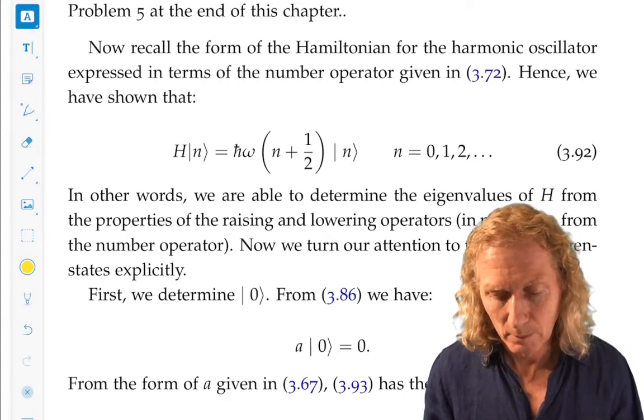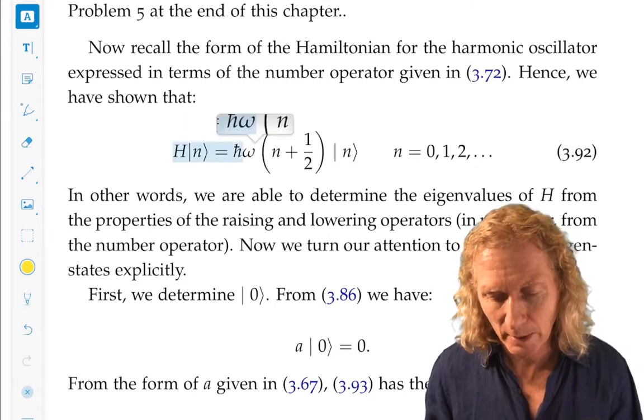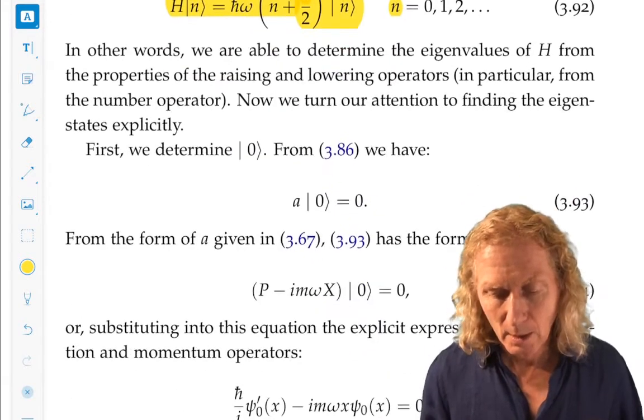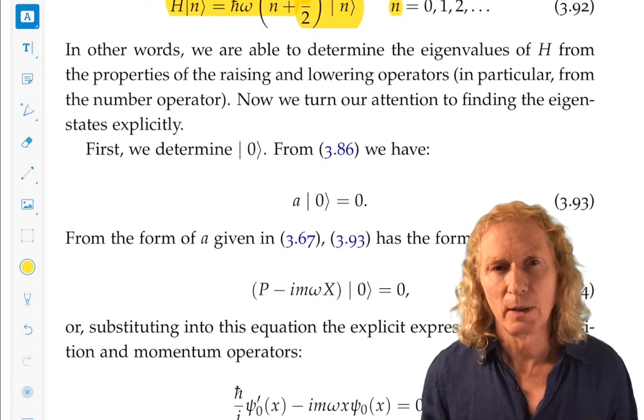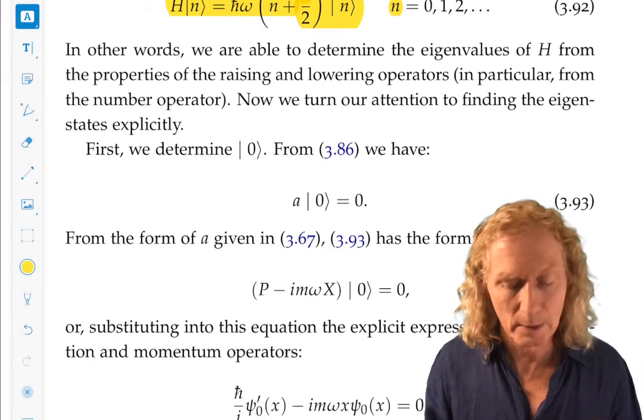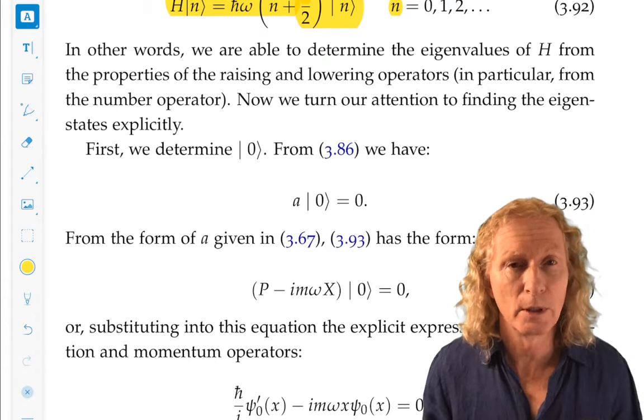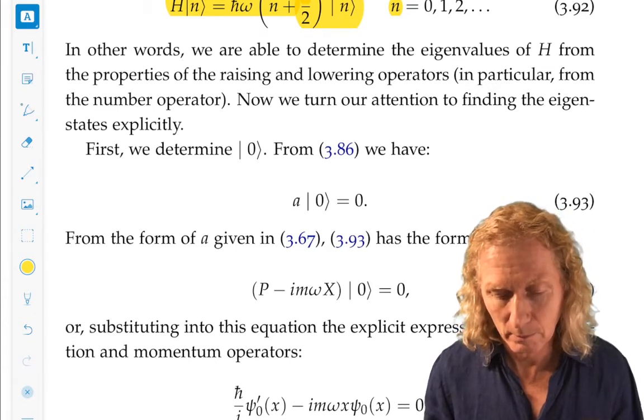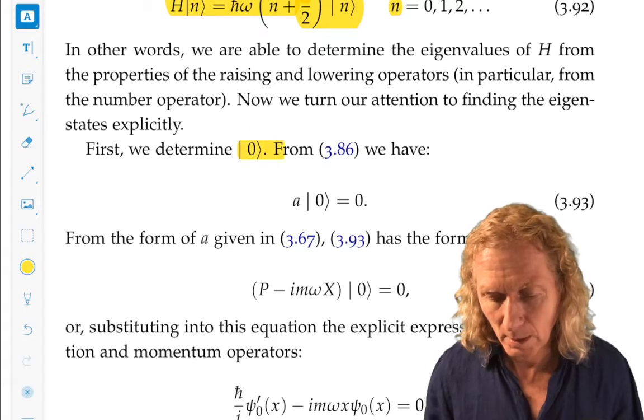So we want to first get a hold of the ground state, because everything else will come from that. Remember the expression we derived for the eigenvalues. So we need to determine the ground state. And that's going to be a function, right? A solution of the time-independent Schrödinger equation.